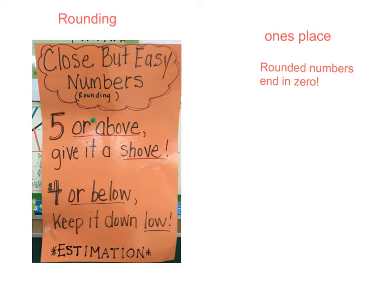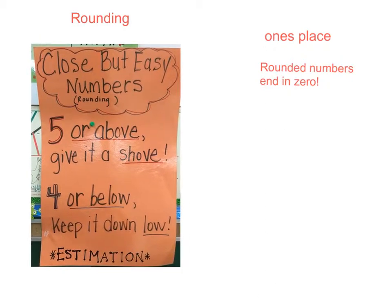To begin with, we want to remember our close but easy numbers poem, our rounding poem. Let's say it together. Five or above, give it a shove. Four or below, keep it down low.